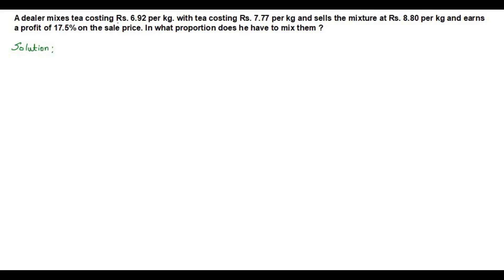Here we have a problem on proportion. Let us read the question to understand the information given. A dealer mixes tea costing rupees 6.92 per kilogram with tea costing rupees 7.77 per kilogram and sells the mixture at rupees 8.80 per kilogram and earns a profit of 17.5 percent on the sale price. In what proportion does he have to mix them?